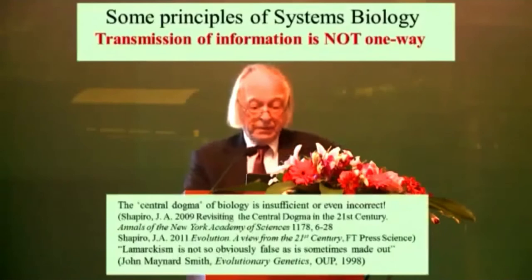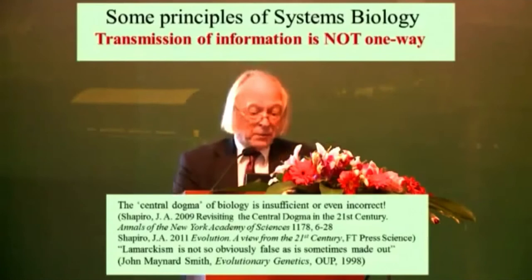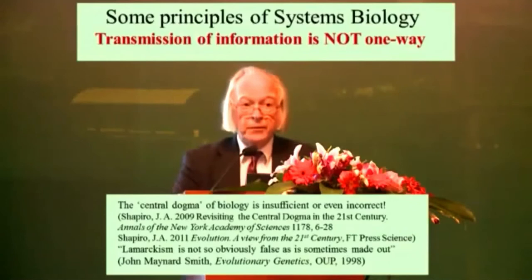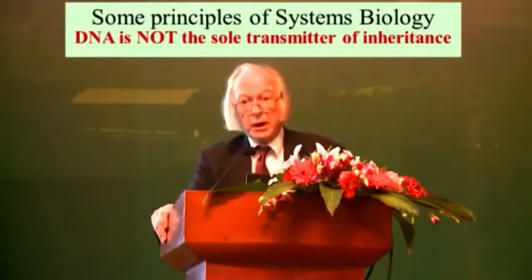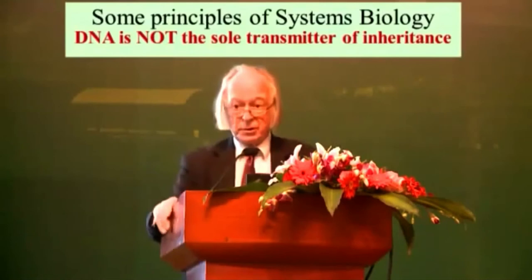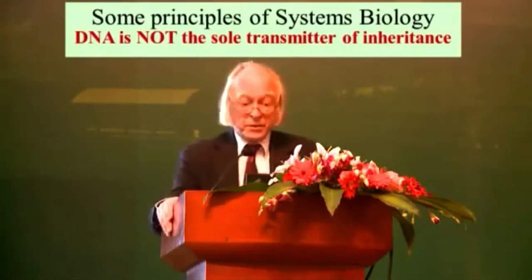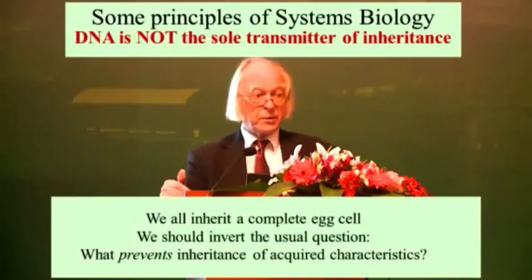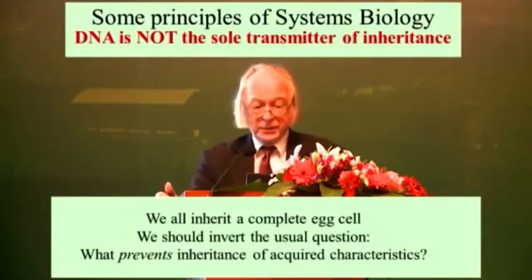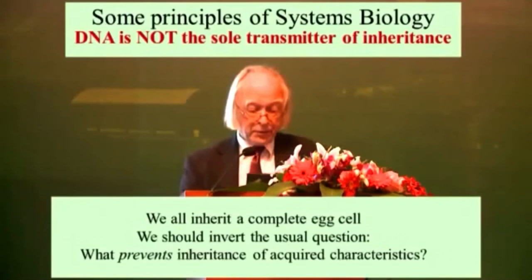One of the principles of systems biology that I outlined in my book is that the transmission of information is simply not one way. I would argue that the central dogma of molecular biology has been very badly misinterpreted. Moreover, some of the key writers on the modern synthesis, including John Maynard Smith, have realized that — even as long ago as 1998 — John Maynard Smith himself, a great contributor to Neo-Darwinism, wrote that Lamarckism — that is the inheritance of acquired characteristics — is not so obviously false as is sometimes made out. And the next principle is that DNA is not the sole transmitter of inheritance. We all, after all, inherit a complete egg cell as well as the DNA. We will see the significance of that in one of the experiments I will refer to later.